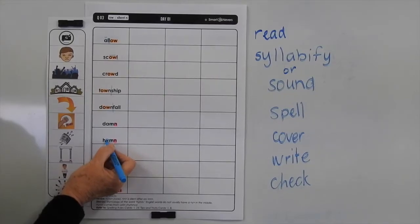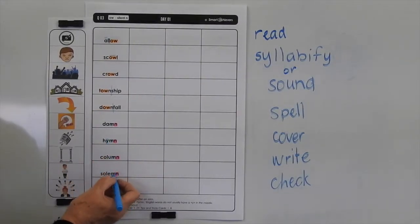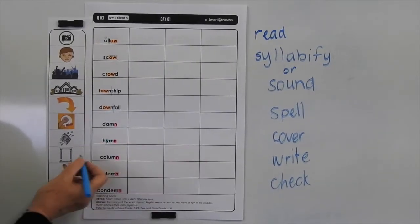Now in 'hymn', we've got the Y making its vowel sound, and there's no real surprises in the rest of those words.